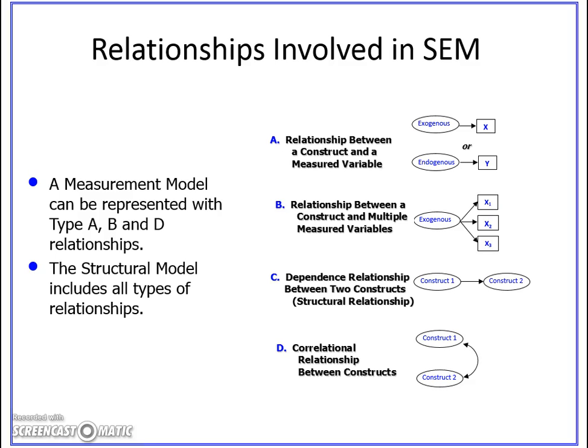A measured variable is another name for an observed variable. The only case where you find a structural model is when you are depicting a dependence relationship — a path relationship going from one construct to another construct. In a measurement model, you will never have a single directed arrow from one construct to another; that only happens in a structural relationship. In a measurement model, you will always have a correlational relationship, depicting interdependence rather than dependence.